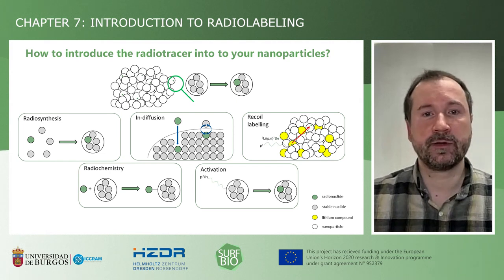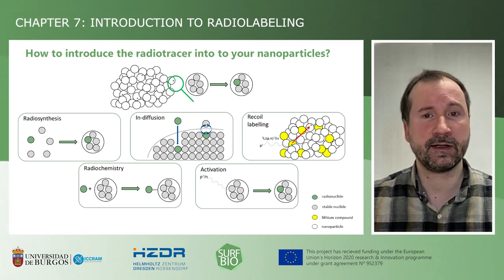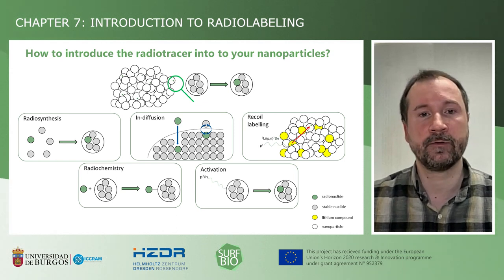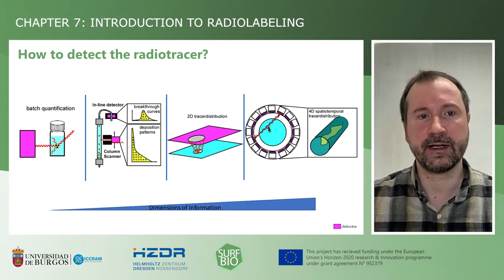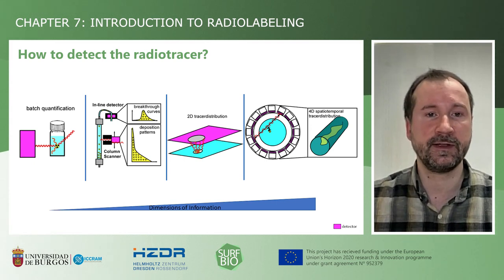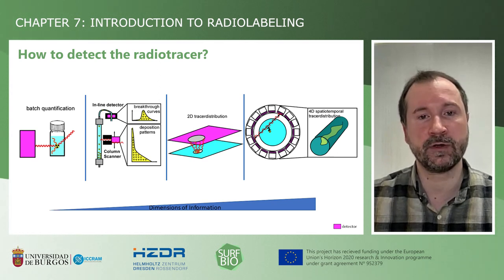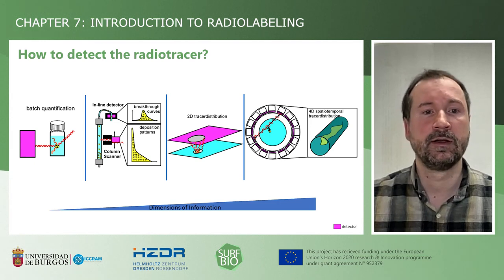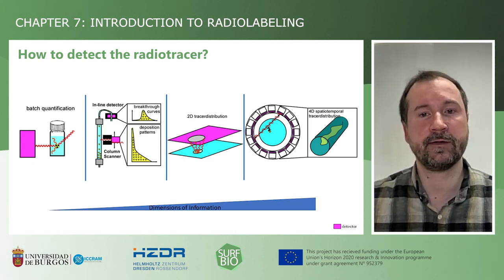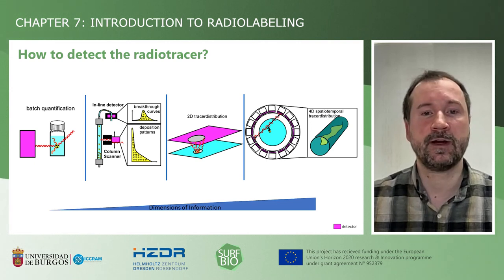If you have successfully gone through the process of obtaining a radiotracer and radiolabeling your nanoparticles, you have several modalities of detection that can give you a variety of different information on where the radiotracer is in your system. Here you can see different detection modalities in order of increasing dimensionality of the obtained information. The simplest information would just be the quantification of the amount of radiolabeled substance in a specific sample. Using inline detectors or column scanners, you can detect breakthrough curves in transport experiments or deposition patterns alongside a column. Methods such as autoradiography will give you a quantitative 2D image of the tracer distribution, typically with a 50 to 100 micrometer resolution.